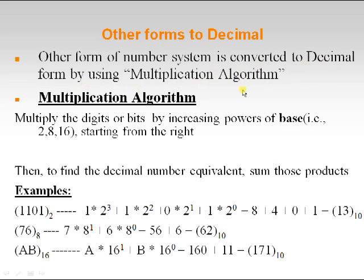Now let us see that other forms of number systems are converted to decimal using the multiplication algorithm. We have to use one algorithm for converting other form numbers into decimal numbers, and that algorithm is called the multiplication algorithm. We multiply the digits or bits by increasing powers of the base — that is 2, 8, or 16 — starting from the right.